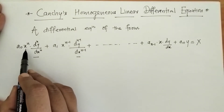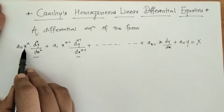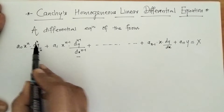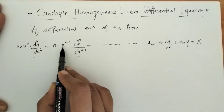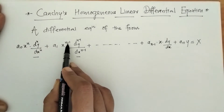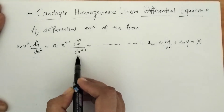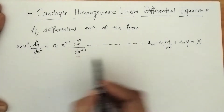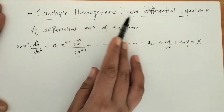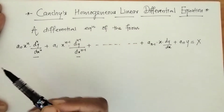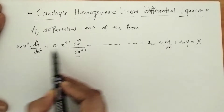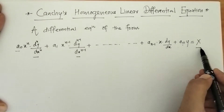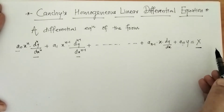Here we can check that the index of x is n and the order of the derivative is n. Similarly, the index of x is n minus 1 and the order of the derivative is n minus 1. So yes, this is Cauchy's homogeneous linear differential equation, where a0, a1 up to an are constants and x is the independent variable.